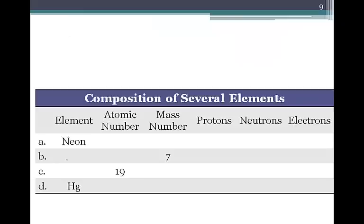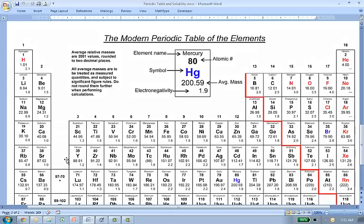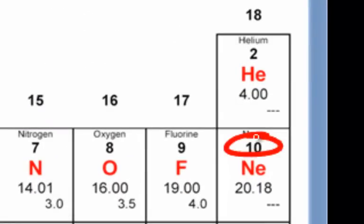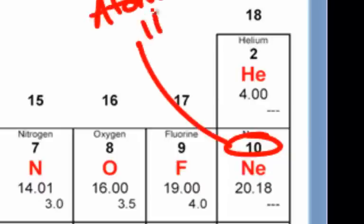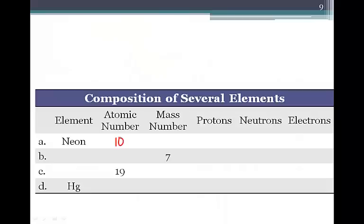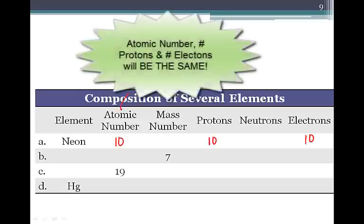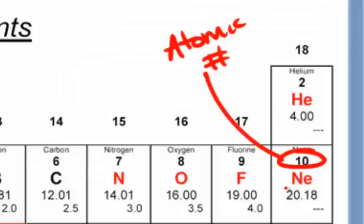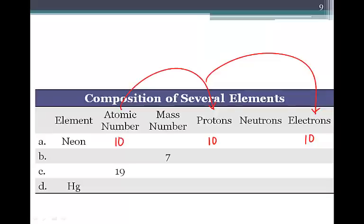Let's practice with neon. Looking at the periodic table, neon's atomic number is ten, so the number of protons is ten and the number of electrons is ten — these three values are always going to be the same. The atomic mass is 20.18, which we round to get a mass number of twenty. So twenty equals ten protons plus neutrons, giving us ten neutrons.